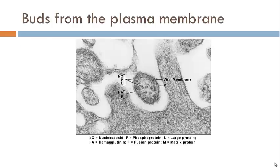The life cycle of the virus includes budding from the host cell. There are viral proteins put in the plasma membrane of the host, and the plasma membrane becomes the coating for the virus.